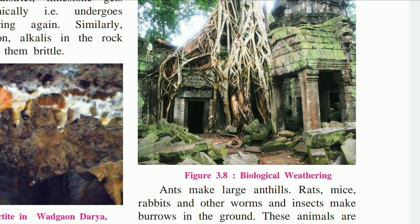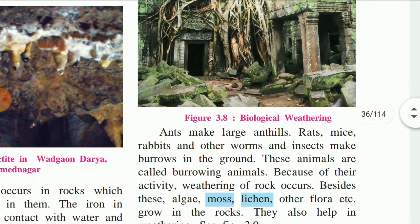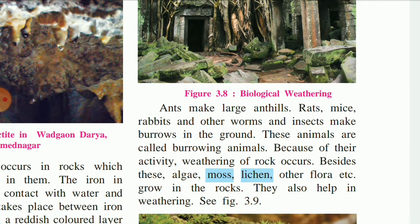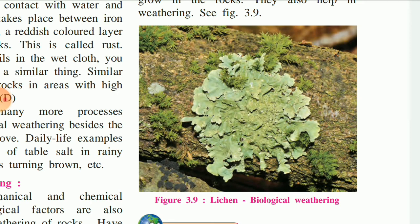Rats, mice, rabbits, and other worms and insects make burrows in the ground. These animals are called burrowing animals and because of their activity, weathering of rock occurs. They make holes and burrows in the rock and because of that weathering takes place. Besides this, algae, moss, lichen, and other flora grow on the rock and they also help in weathering. In this way, biological weathering occurs and the rock becomes weak.